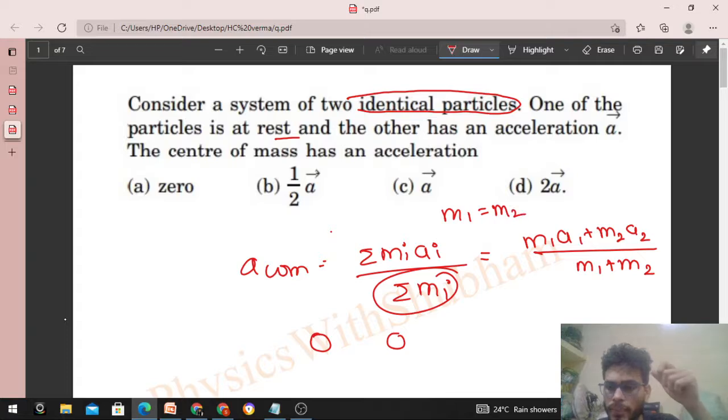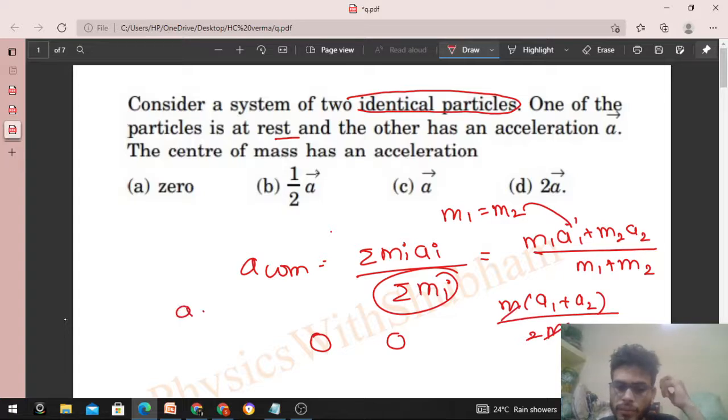So if we put m1 is equal to m2 in this equation, m will come out, right? And that will be a1 plus a2, and in the denominator that will be twice of m. So m will cancel. So check here, it becomes a1 plus a2 by 2.